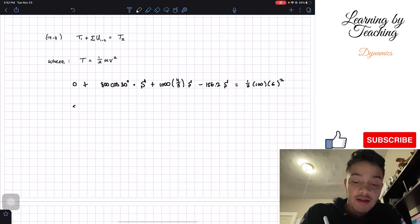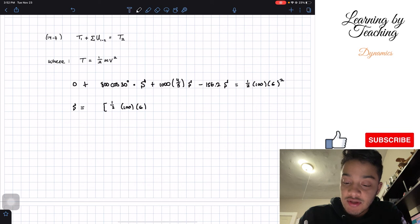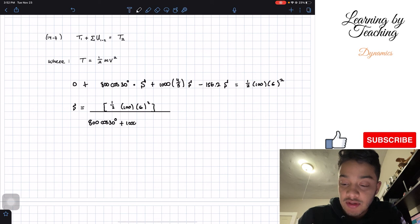So if we solve for S, we will find that this is going to be equal to one-half times 100 times 6 squared, all divided by 800 cosine of 30 degrees, plus 1,000 multiplied by 4 over 5, minus 156.2.